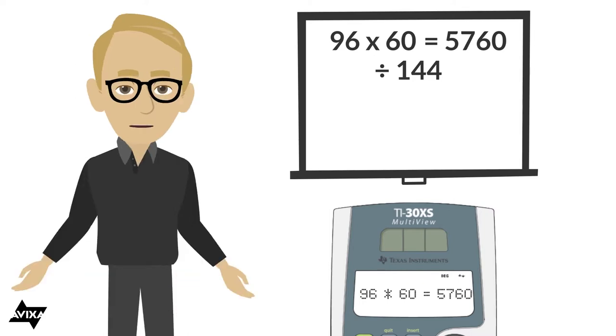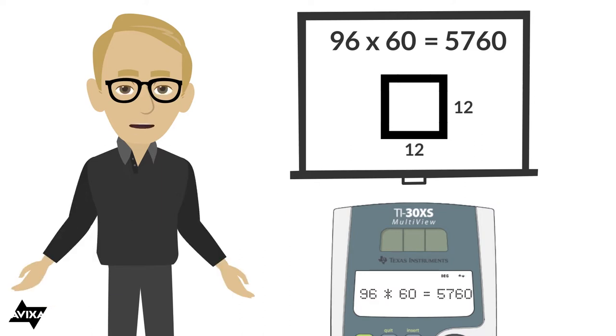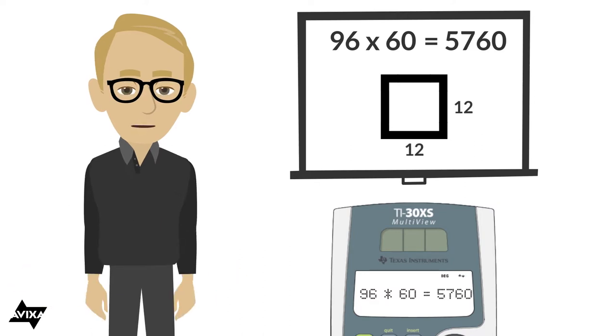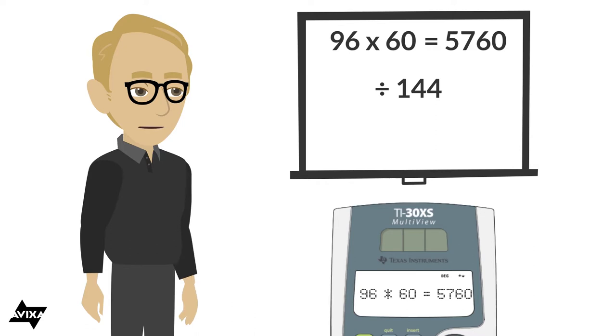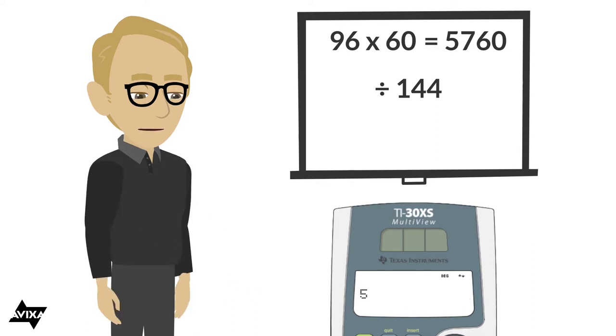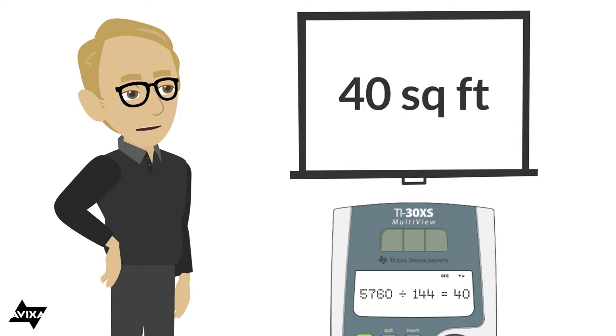And why do we use 144? Well, if I have a square foot and I divide that in inches, that is going to be 12 inches by 12 inches. And 12 times 12, 144. So to convert from square inches to square feet, take your square inches and divide by 144. So I have 5760, I'll divide that by 144, and I get a screen that is a screen area that's 40 square feet.